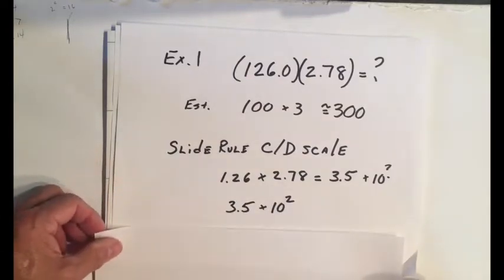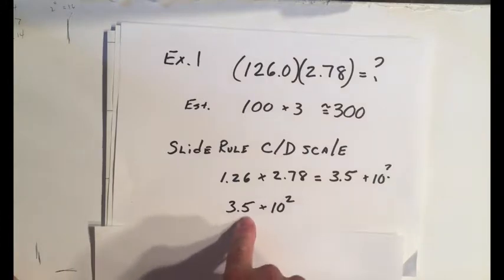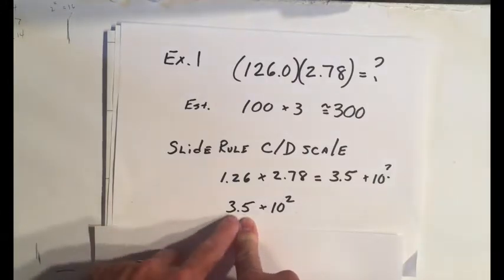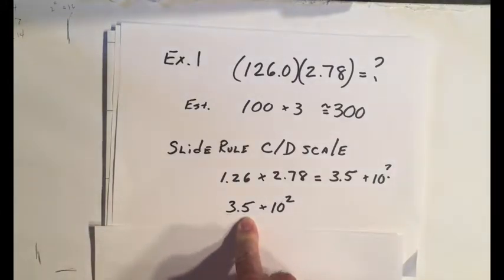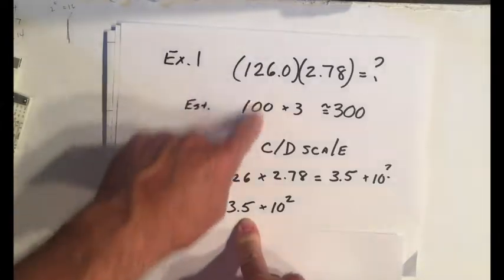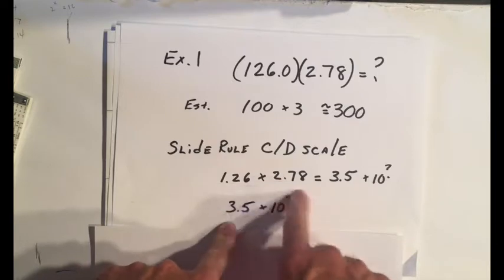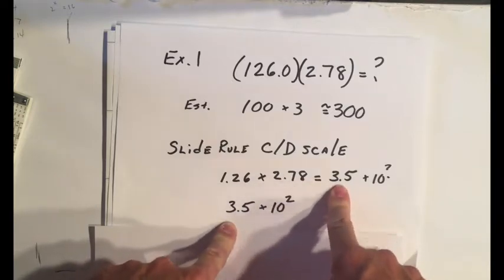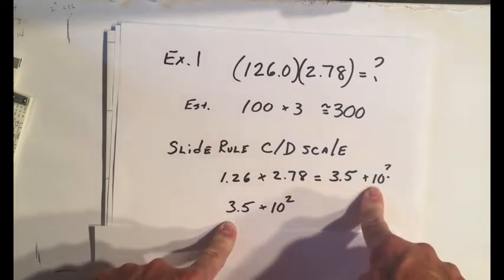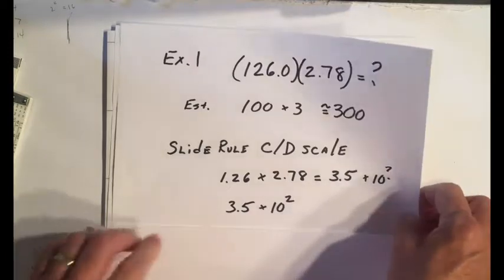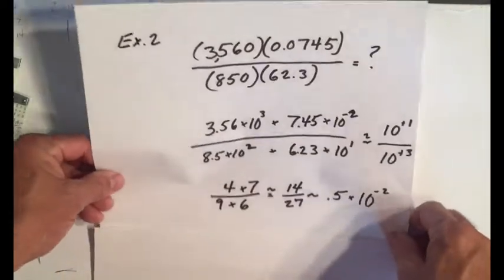And if you look on the slide rule, it's very close to that within two or three decimal places. Or if you look at it on the calculator, it's that close. So this type of calculation, you wouldn't need to really do anything. You could do it in your head, use your C and D scale and come out with 3.5.